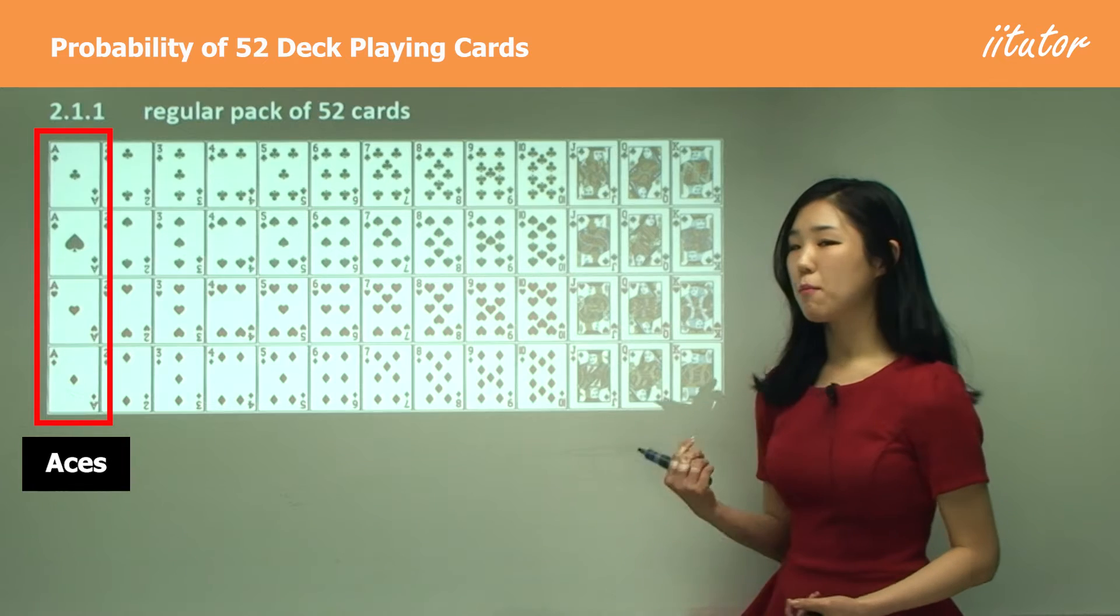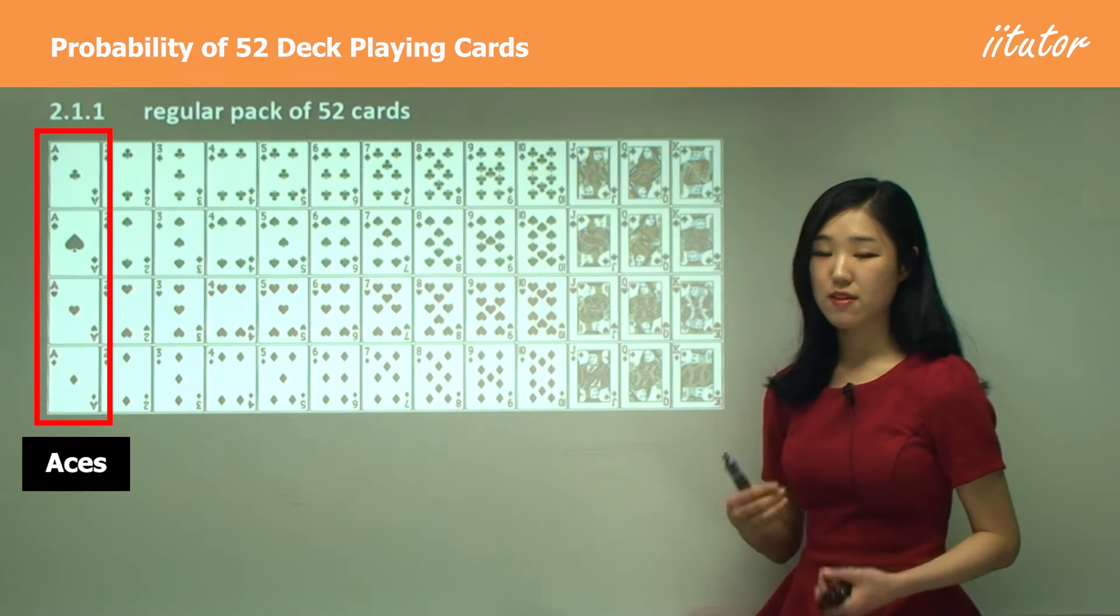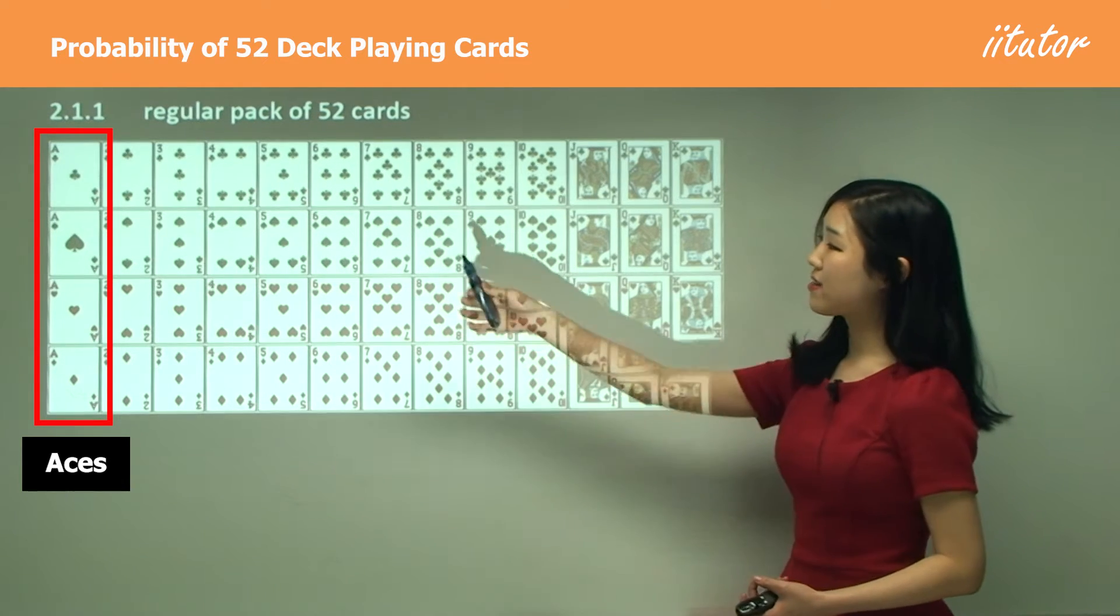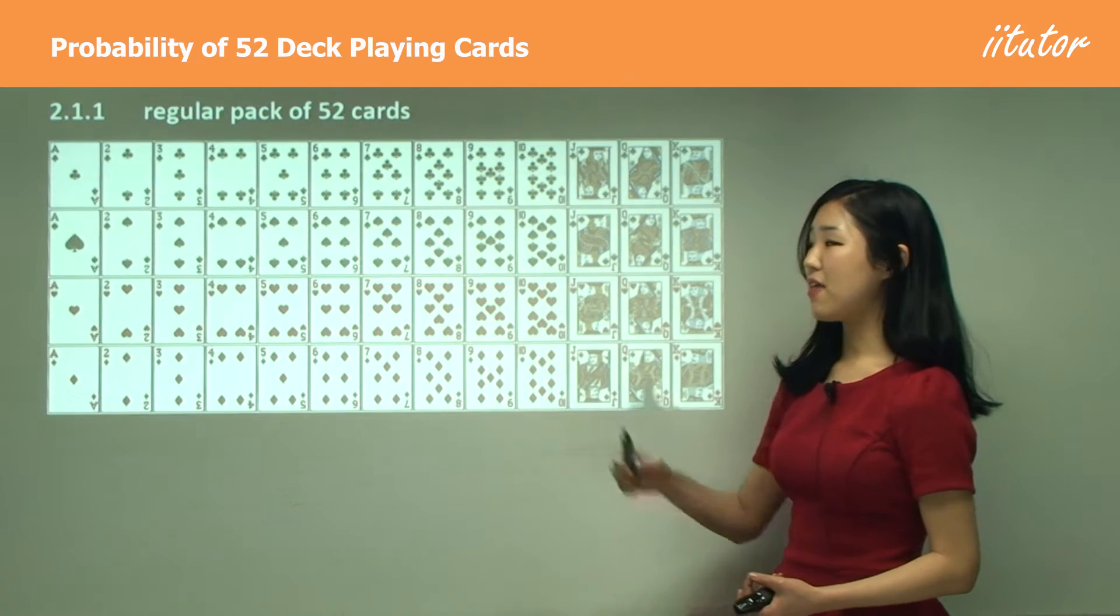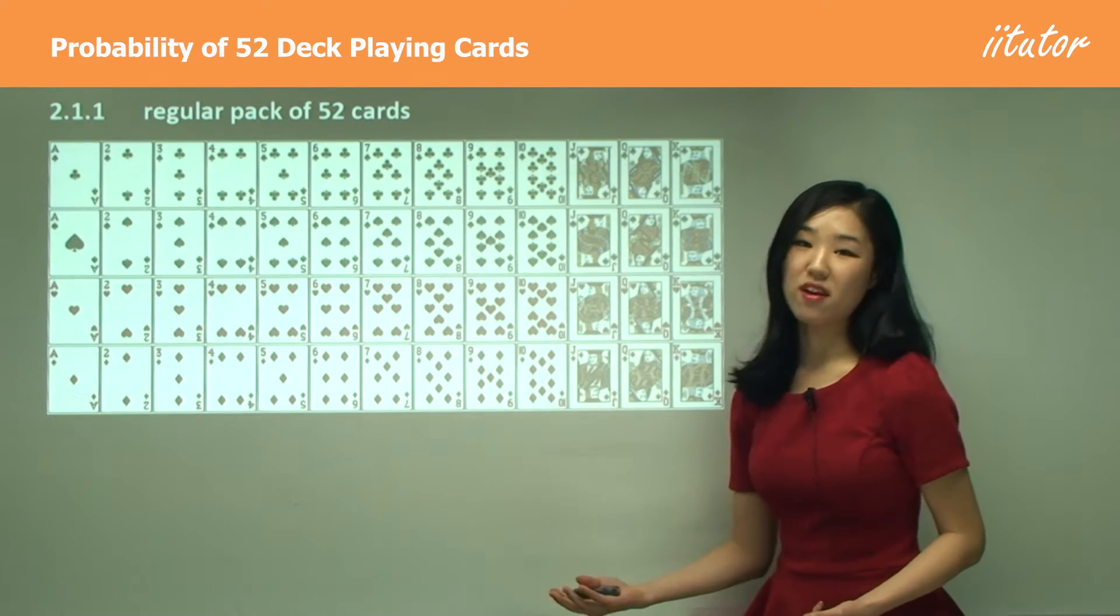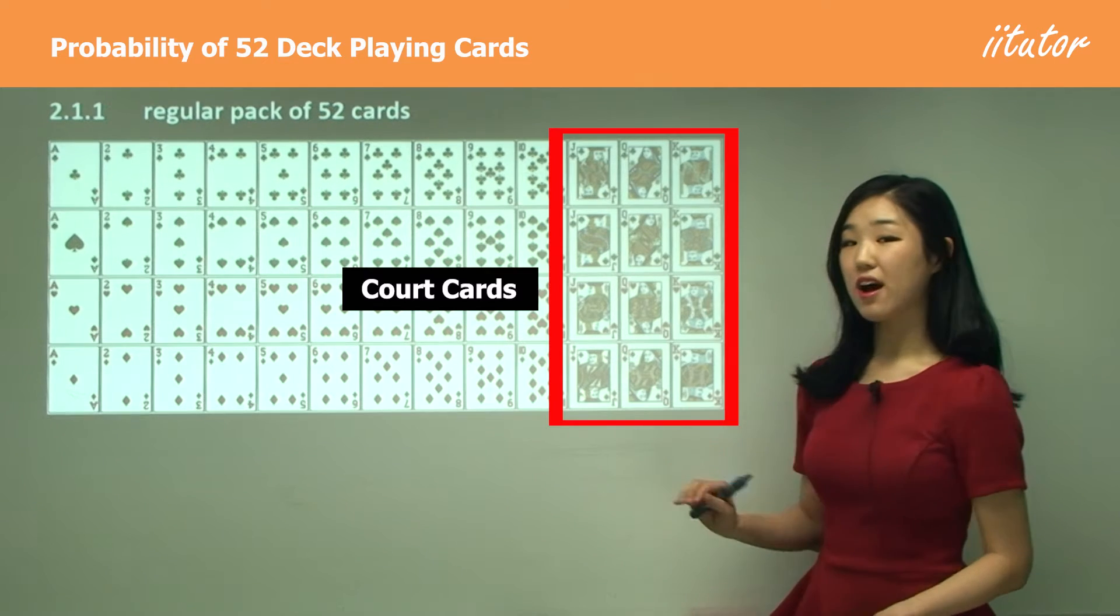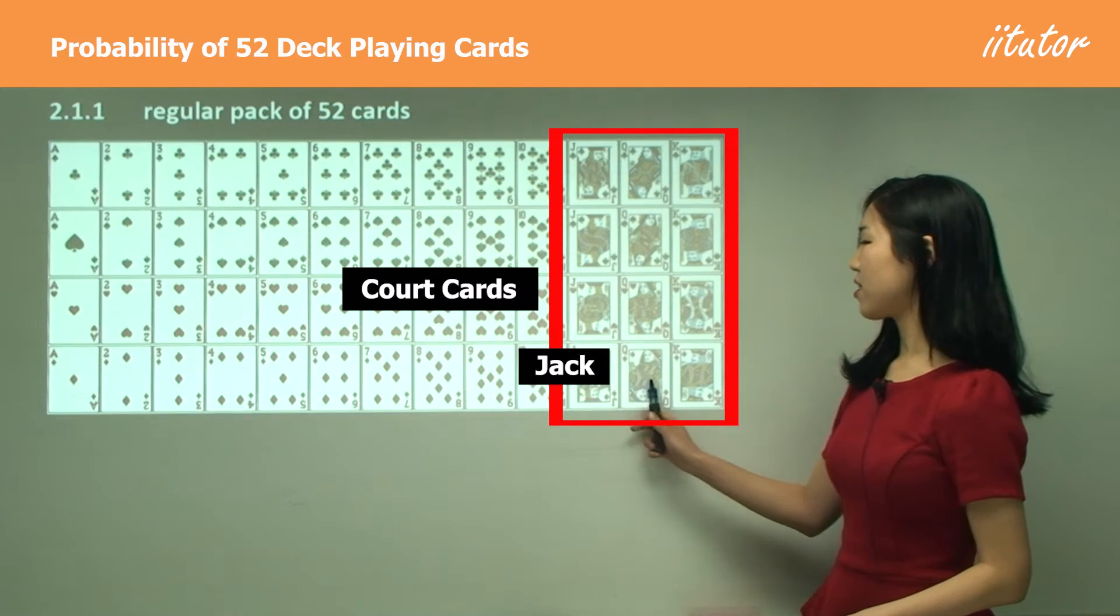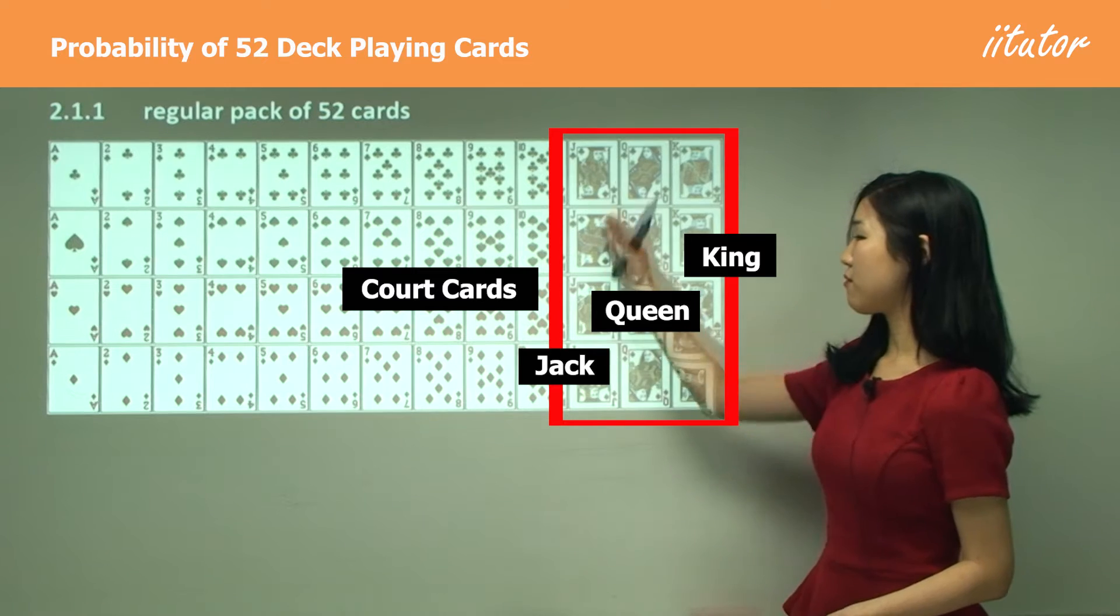You can see we have four aces, and we don't have number one, so make sure you don't think there's a one in the cards. It always starts from two up to ten, and it's always four of each card. You can treat ace as being number one. We have court cards—Jack, Queen, and King—and we have four of each as well.